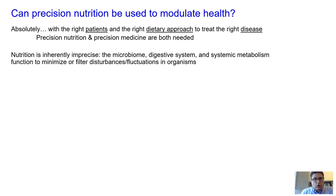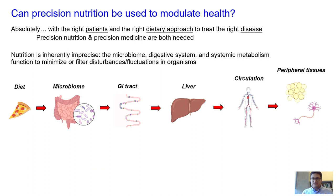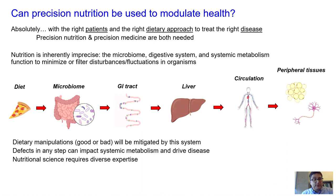Nutrition is ultimately going to be inherently imprecise. This digestive system has been engineered and evolved to minimize the fluctuations that arise as food is taken in and processed by the gut, GI tract, and through the circulation. Dietary manipulations, be they good or bad, are going to be mitigated by the system. As an engineer, I find that nutritional science is really challenging in that it requires diverse expertise — whereas the NIH is built on disease states, you need to be a jack of all trades to really understand what's happening to your food.